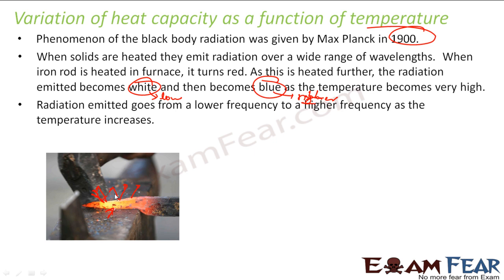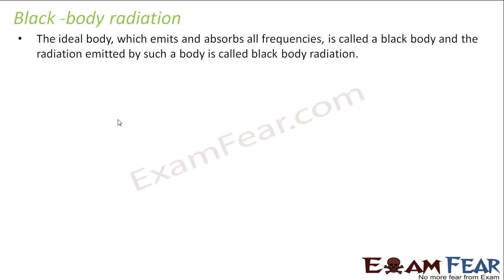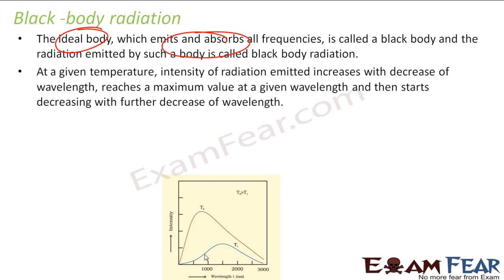As the temperature goes up, the frequency of radiation changes from lower to higher. And that gives a hint that the particle there, on heating, is changing its behavior. That clearly says that the electromagnetic radiations we get have something to do with particle nature also. The black body is nothing but an ideal body which emits and absorbs all frequencies. They are called black body. And we have seen that with experiments, at a given temperature, the intensity of radiation emitted increases and then decreases with a decrease of the wavelength.